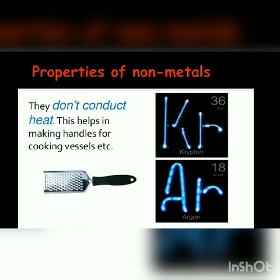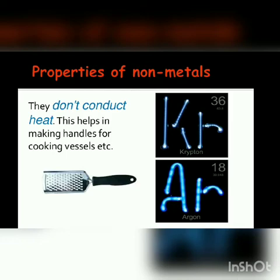Non-metals don't conduct heat — they are insulators. This property helps in making the handles for cooking vessels. The handles are made of non-metals because they do not conduct heat, so they don't become hot and prevent our hands from getting burns.